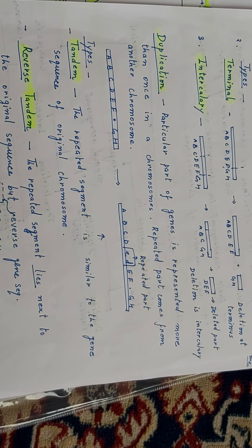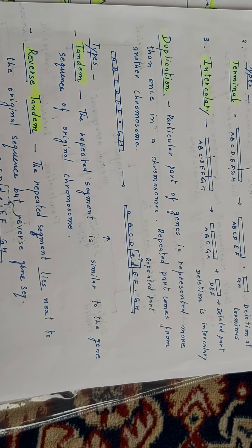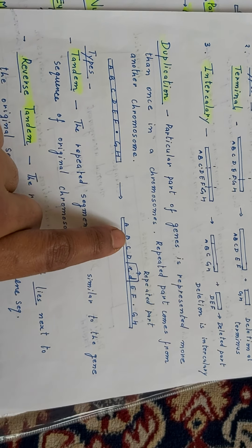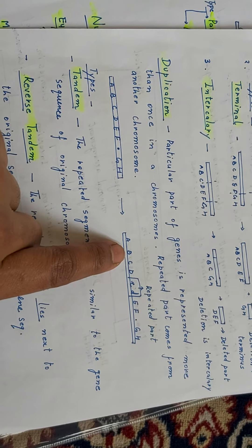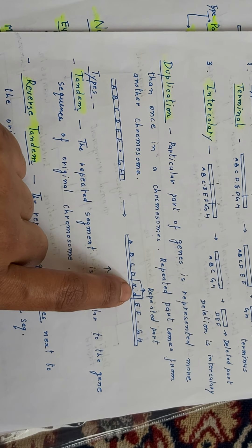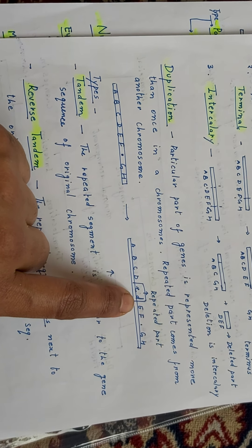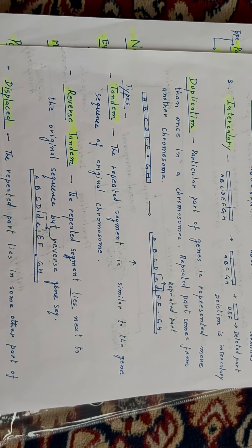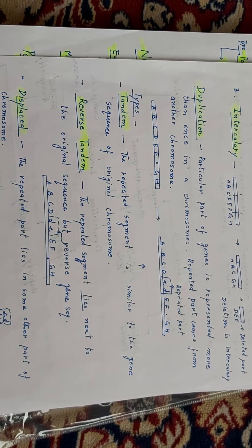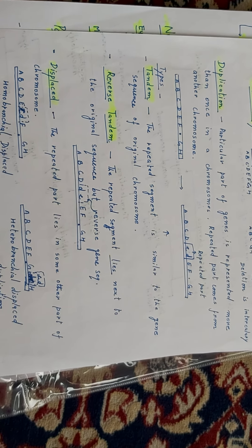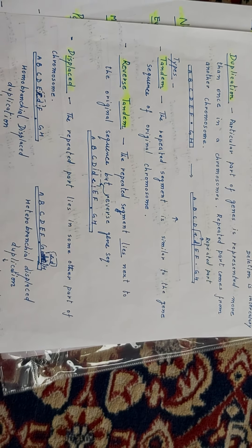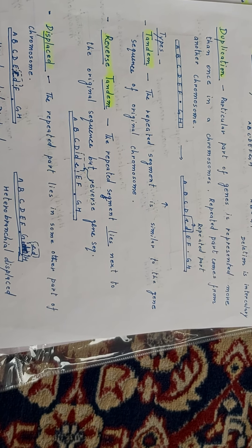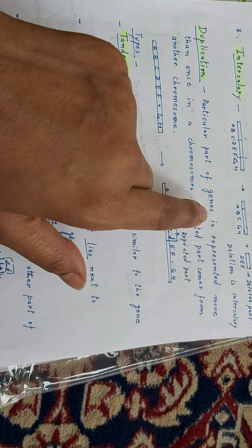Next is duplication — a particular part of a gene is present more than once in a chromosome, and the repeated part comes from another gene. The chromosome changes will show A, B, C, D and repeated part is small c and small d coming from another chromosome. Duplication is of three types: tandem duplication, reverse tandem duplication, and displaced duplication.